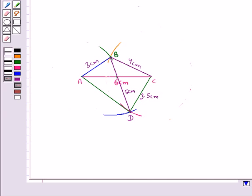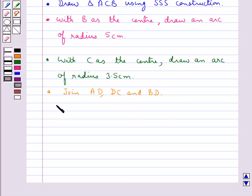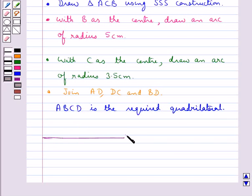So this ABCD is the required quadrilateral when we are given three sides AB, BC and CD and the two diagonals AC and BD. So this completes the session. Hope you have understood how we construct a quadrilateral when we are given the three sides and two diagonals of a quadrilateral.